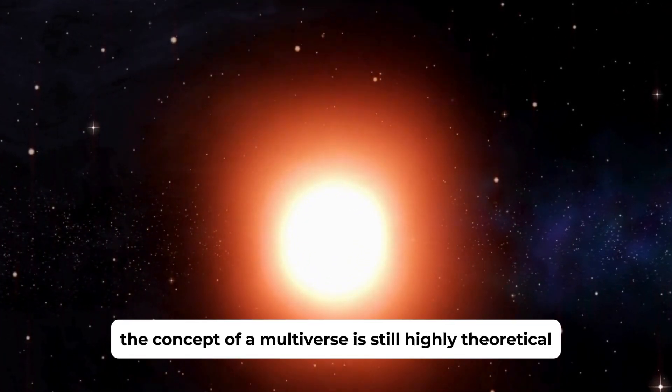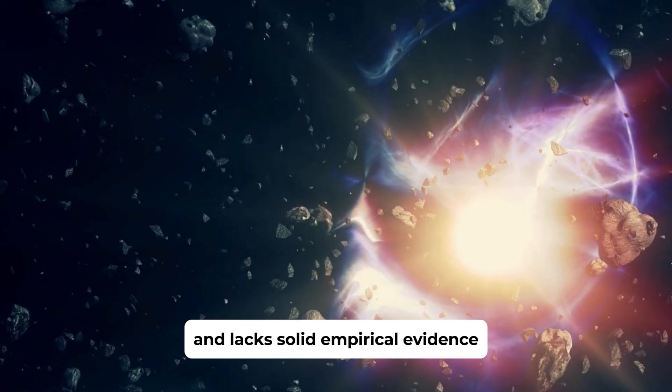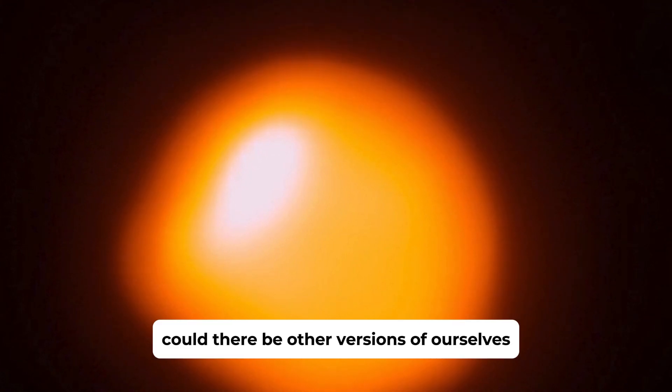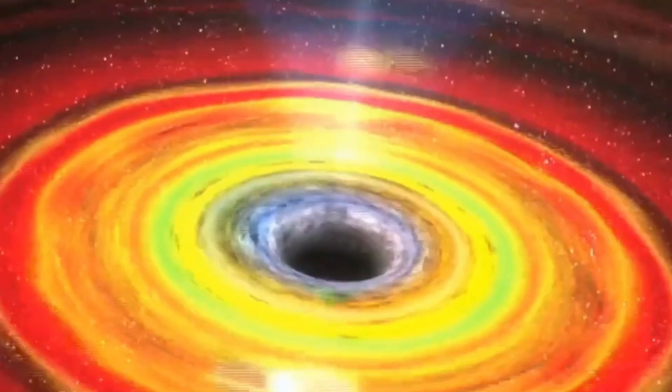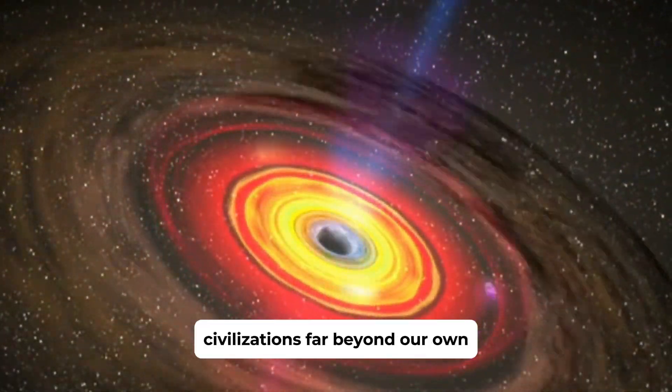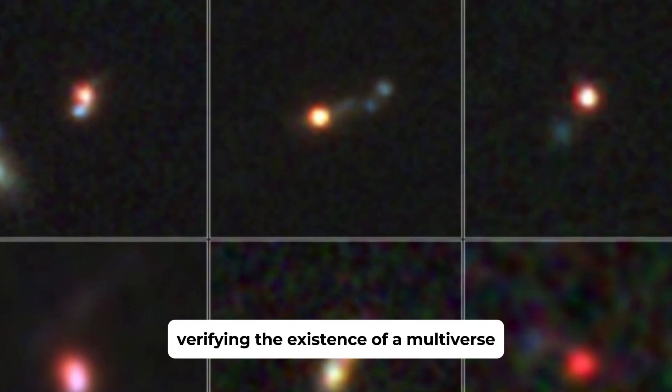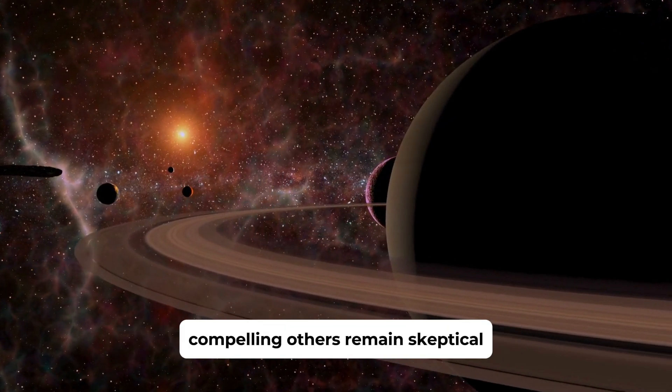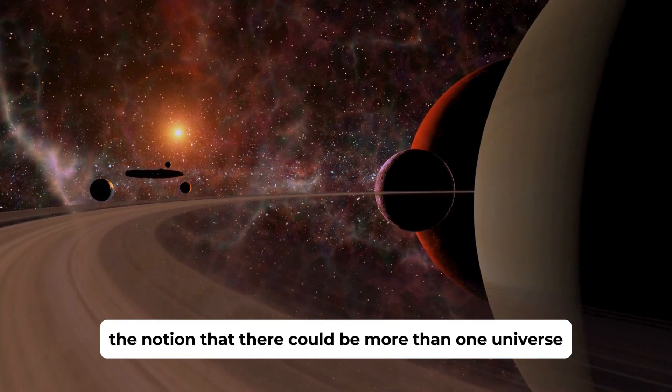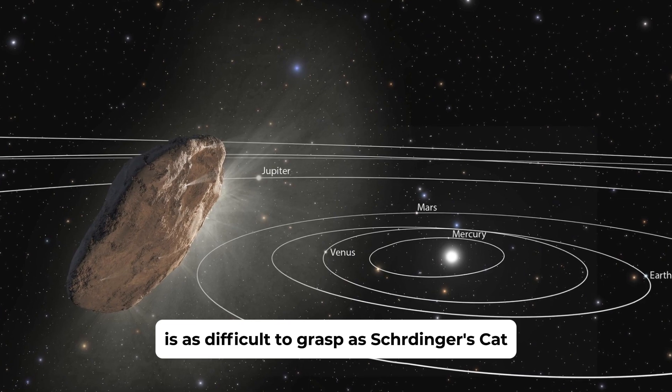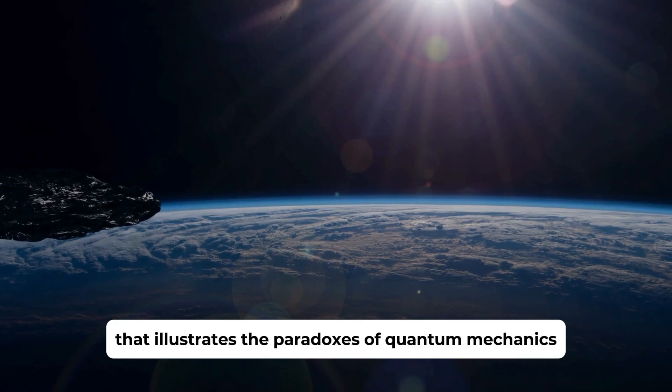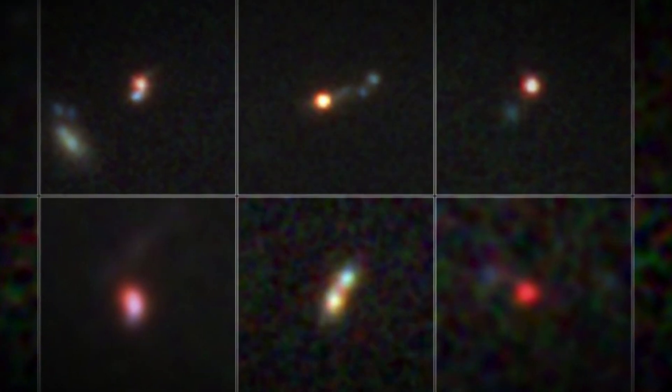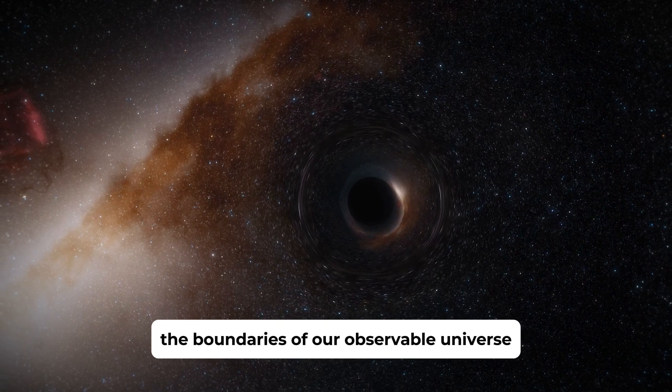The concept of a multiverse is still highly theoretical and lacks solid empirical evidence, but it raises intriguing questions about the nature of reality. Could there be other versions of ourselves living out different lives in alternate universes? Could some of these universes be home to advanced civilizations far beyond our own? Verifying the existence of a multiverse is a daunting challenge. While some scientists and philosophers find the idea compelling, others remain skeptical. The notion that there could be more than one universe is as difficult to grasp as Schrödinger's cat, the famous thought experiment that illustrates the paradoxes of quantum mechanics. Just as we cannot know the state of the cat until we observe it, we have no way of knowing what lies beyond the boundaries of our observable universe.